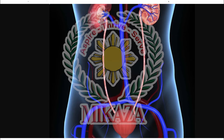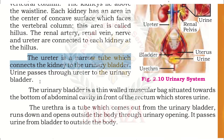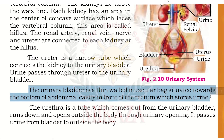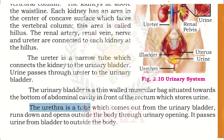When kidney filtration is completed, urine passes through the ureter to the urinary bladder. The urinary bladder is a thin-walled muscular bag situated towards the bottom of the abdominal cavity, in front of the rectum, and it stores urine. The urethra comes out from the urinary bladder, runs down, and opens outside the body, passing urine from the bladder to the outside.